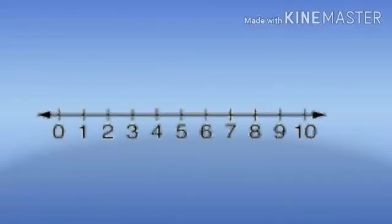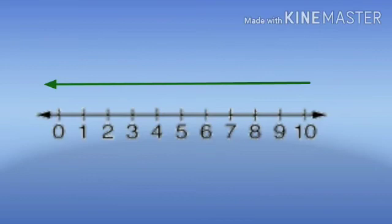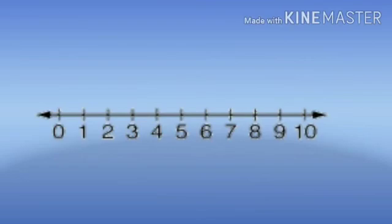Now, let's take another example. My dear students, as we all understand, for subtraction, we have to move towards left side of the number line. A number line always starts with 0.